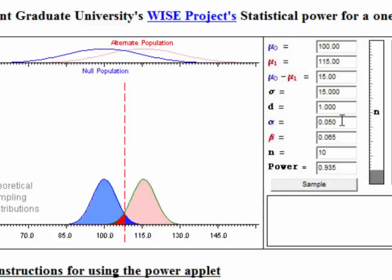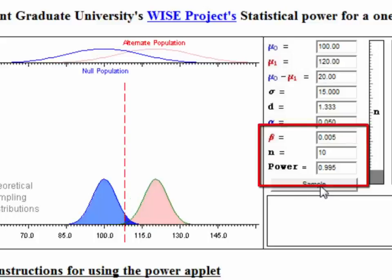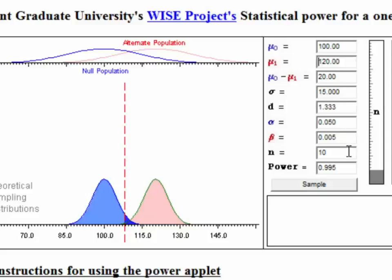Let's leave n at 10 but change the impact of our treatment — the difference between the means. Instead of the difference being 115 to 100, let's change that to 100 and 120, leaving the within-cell variance and everything else the same. The impact of the treatment is greater, so what should happen to power? It should become even greater. Our power has gone up to almost 100%. So as we modify the difference between the means, as we modify alpha, as we modify n, it impacts power.